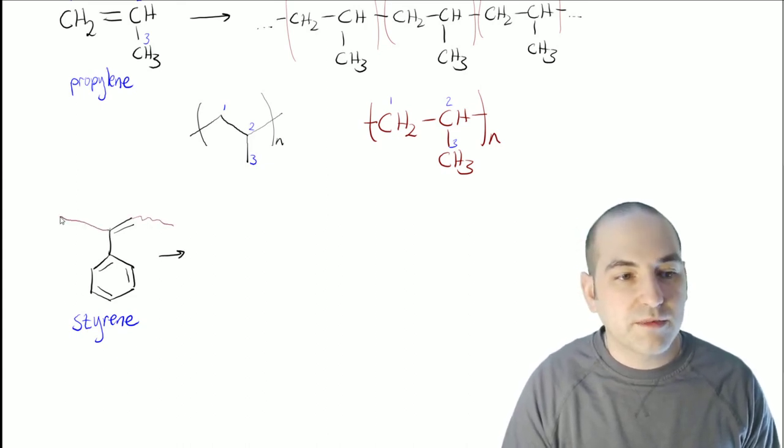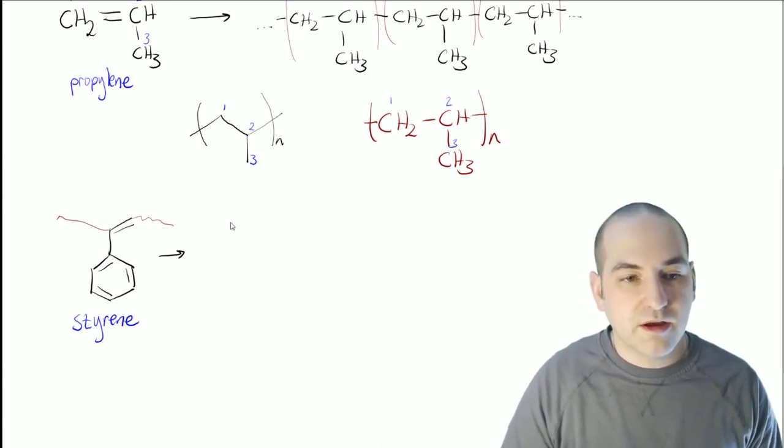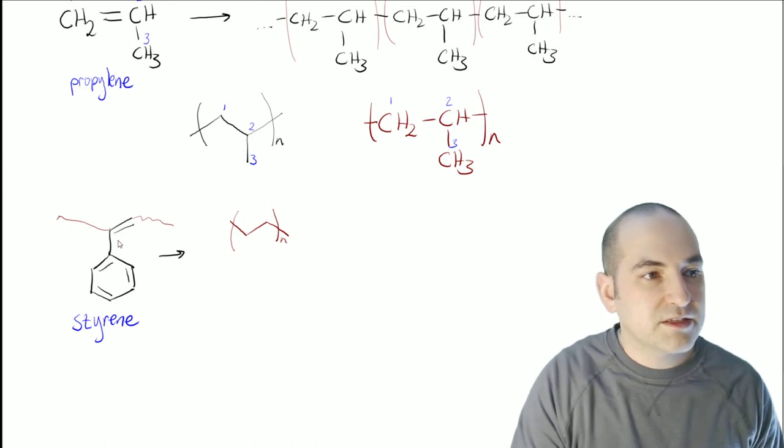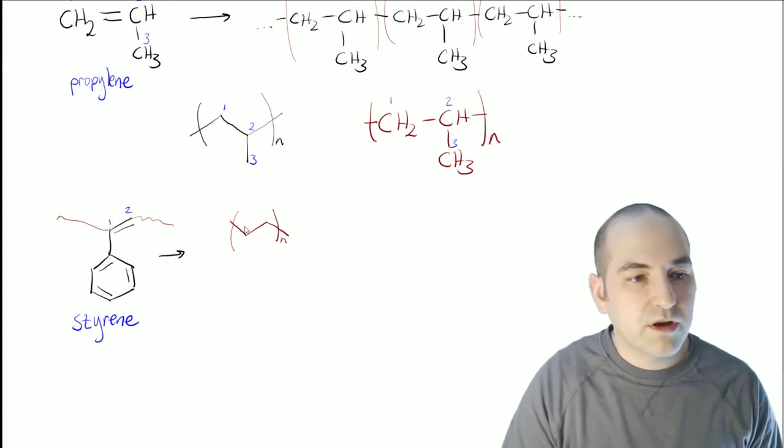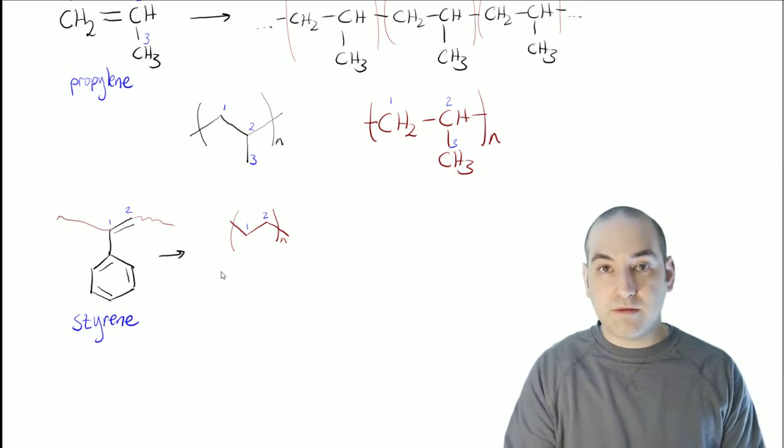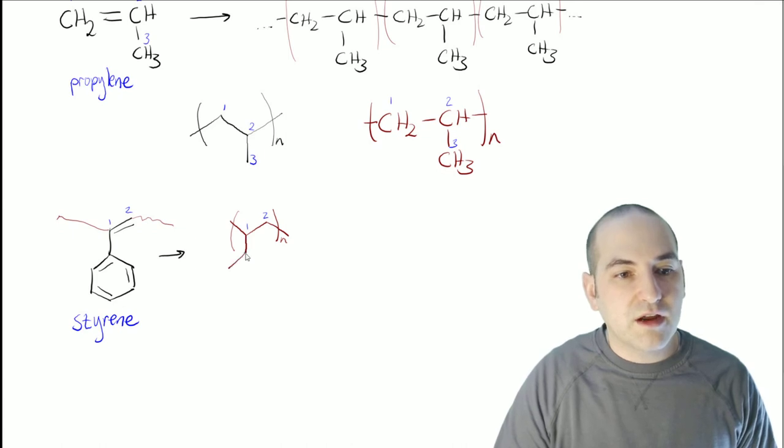So it's going to kind of go from here and from here. So that means that in our repeat structure, or in our polymer structure, we're going to have something like this, again, one and two, one and two. So we lose the double bond because now we have to connect outside of it. And then we have the styrene connecting here.